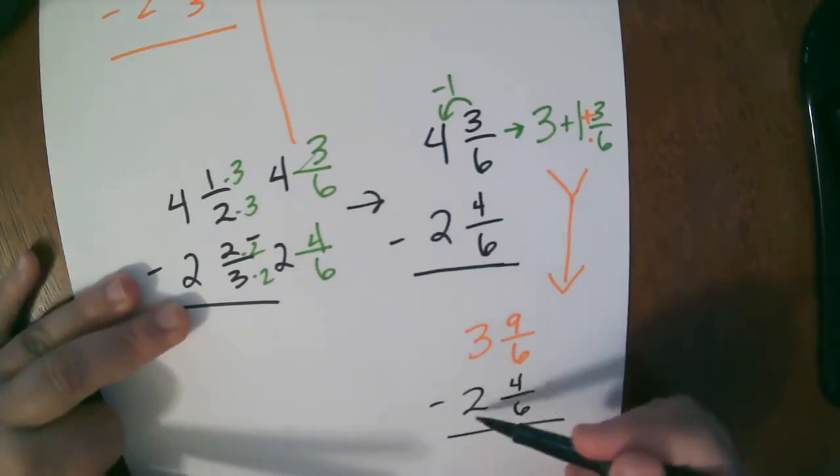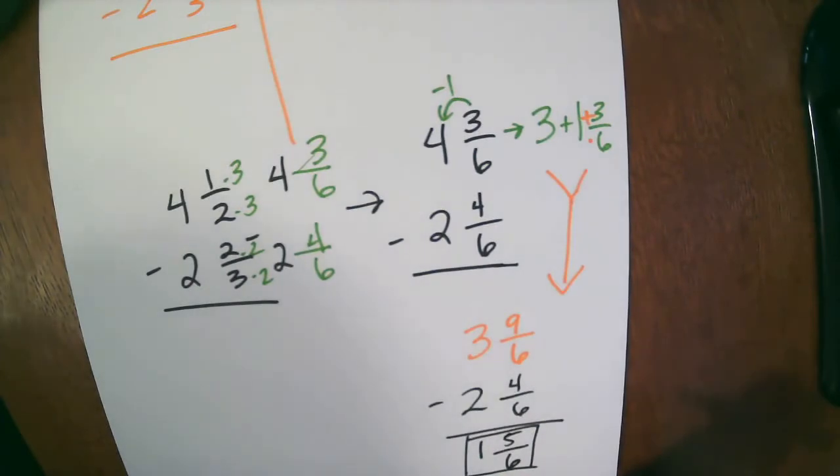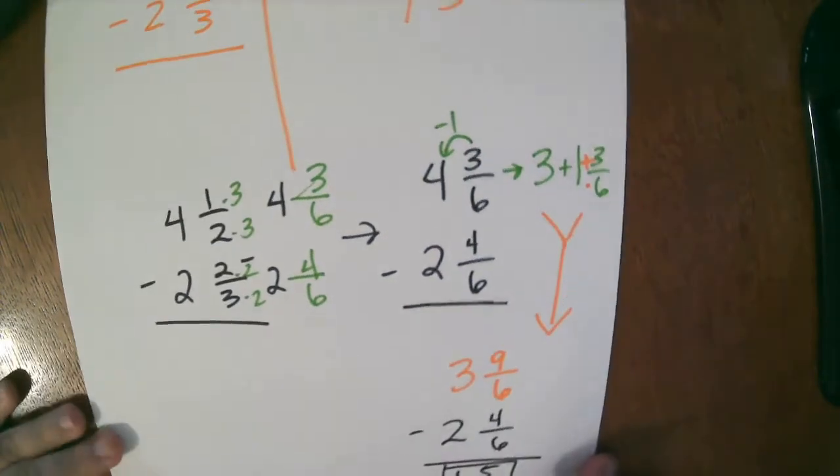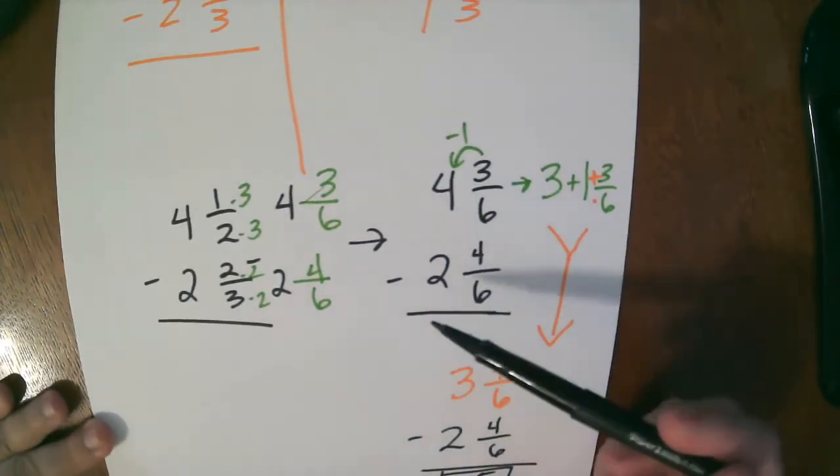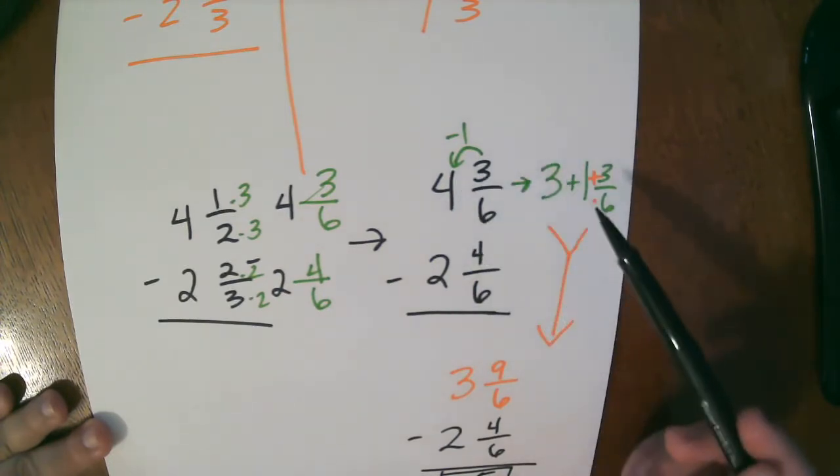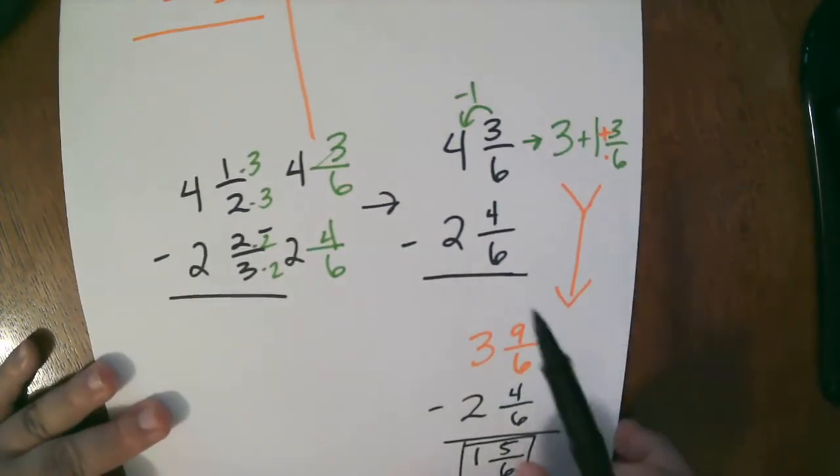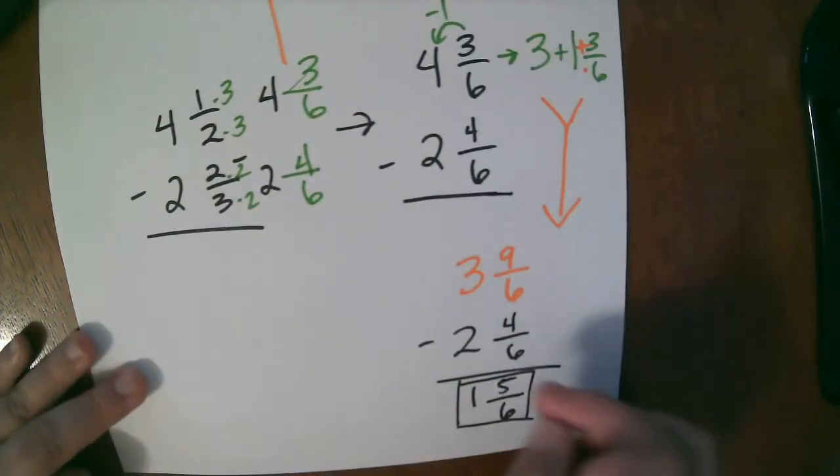So 3 minus 2 is 1, 9 minus 4 is 5, and 6 stays the same. So your answer is 1 and 5 sixths. So that was a lot of steps, but hopefully that made sense to you guys. So we had to borrow here, and I just rewrote it. We took that 1 from the whole number. We gave it to the fraction. We used clock method. We came up with 3 and 9 sixths, and then we subtracted 2 and 4 sixths, and we got 1 and 5 sixths.